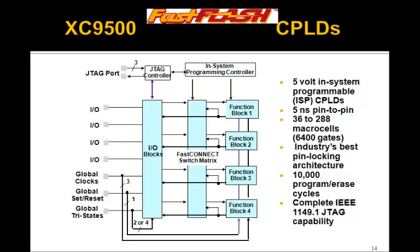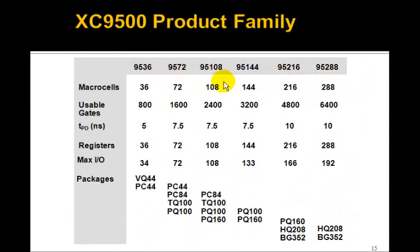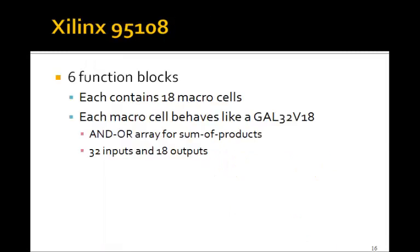Those are examples of PLDs. As you could put more and more transistors into a chip, then CPLDs or complex PLDs were developed, which is basically lots of PLDs inside a single chip. Here's the Xilinx 9500 series. A bunch of I/O blocks, some switches to move them around, and output function blocks. Here's the 9500 family. The 95108, for example, has about 2,400 usable gates. The 95108 has six function blocks. Each one contains 18 macro cells. Each macro cell behaves like a GAL 32 V8. That is, it has 32 inputs and 18 outputs. It's an AND-OR array for the sum of products with 32 inputs and 18 outputs, and it behaves similar to those GAL chips I showed you before.